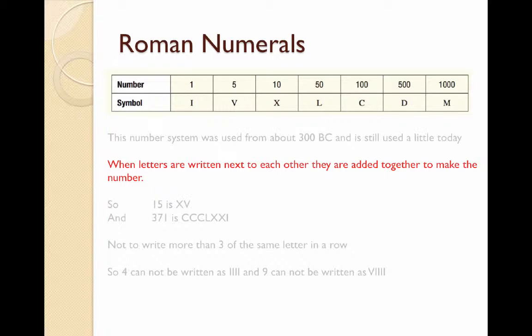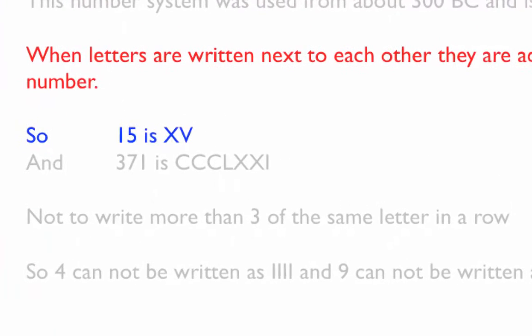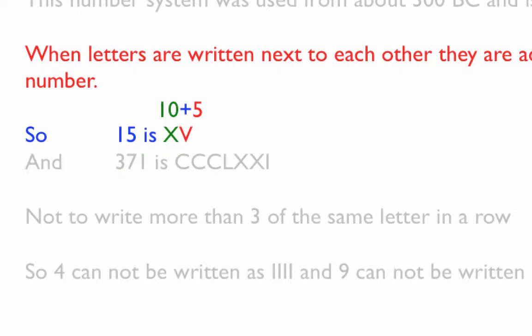When the letters are written next to each other they are added together to make a number. So the number 15 is written as XV which is 10 and 5. The number 371 is CCCLXXI. That's because the three C's represent 300, the LXX represents 70, and the I represents the 1.